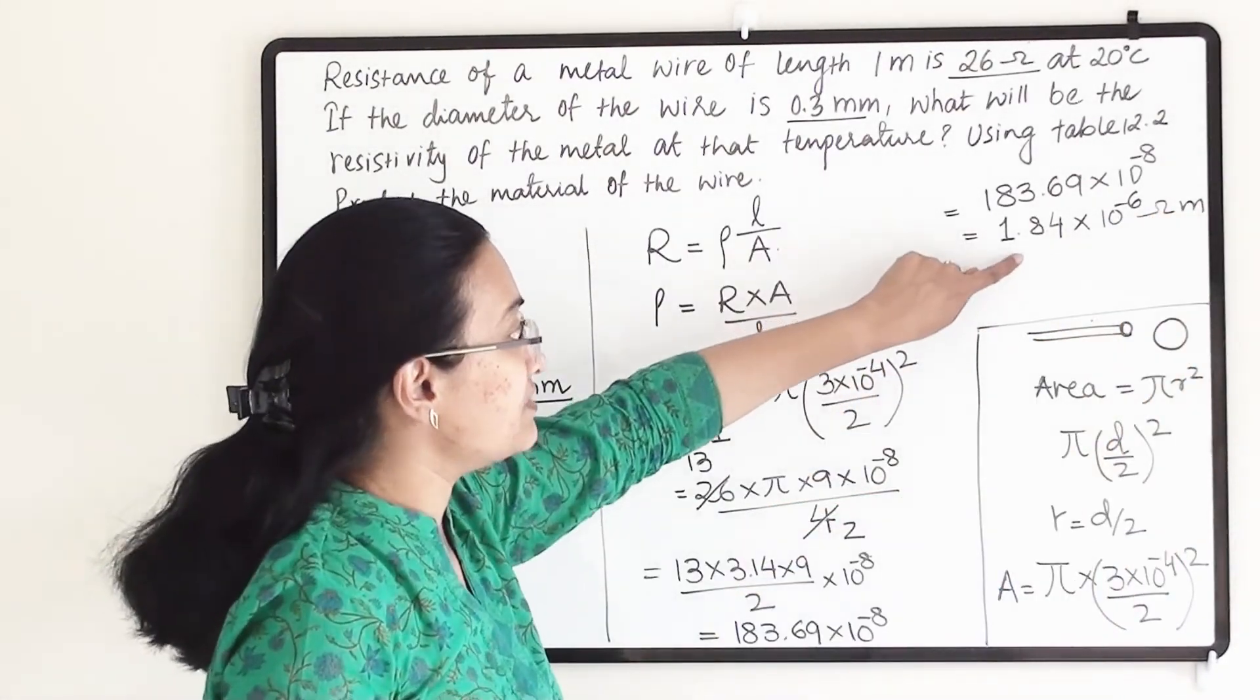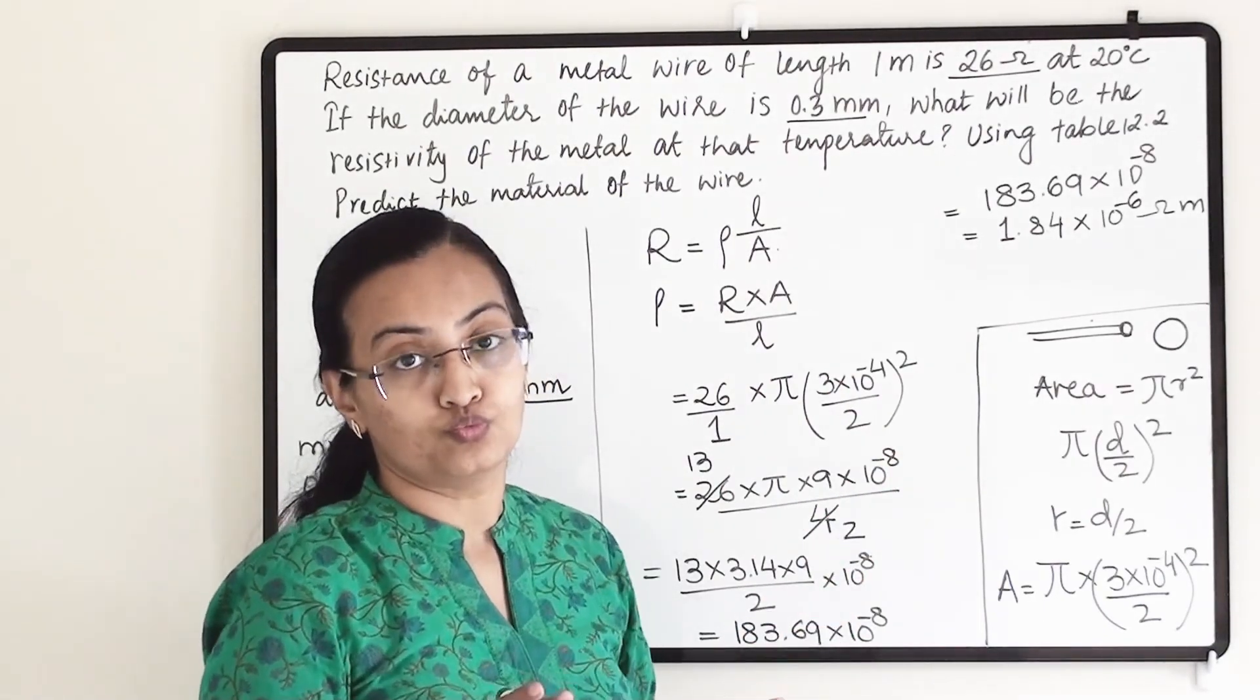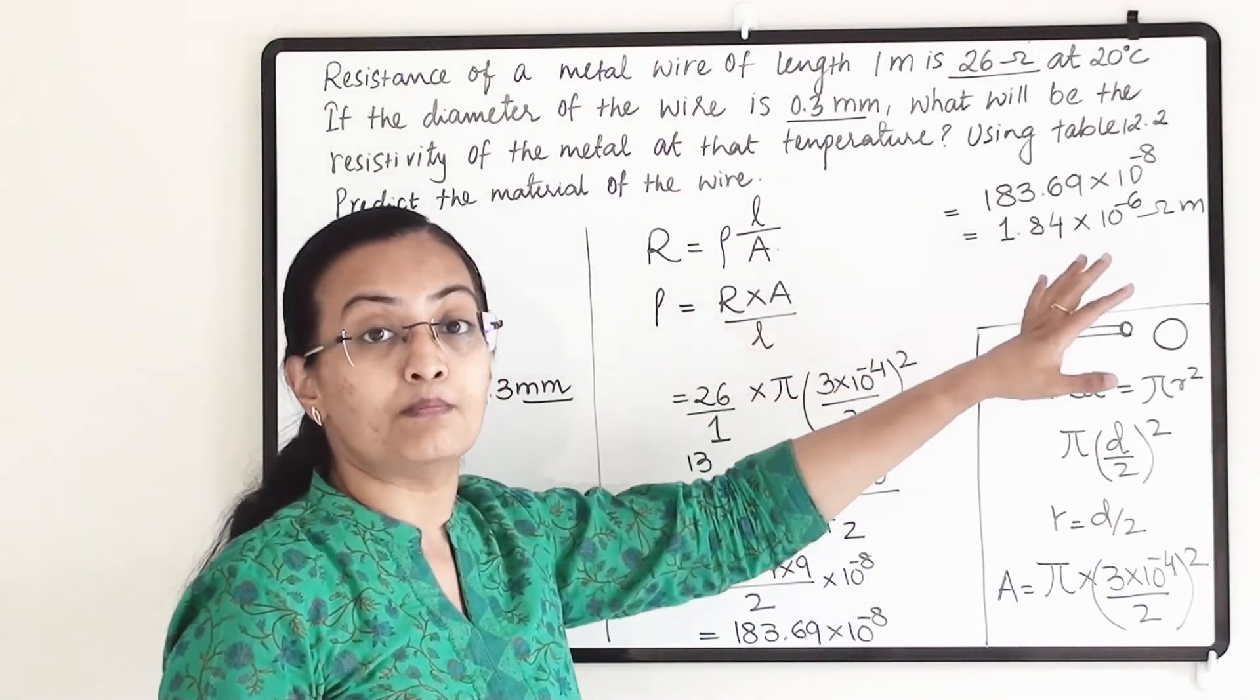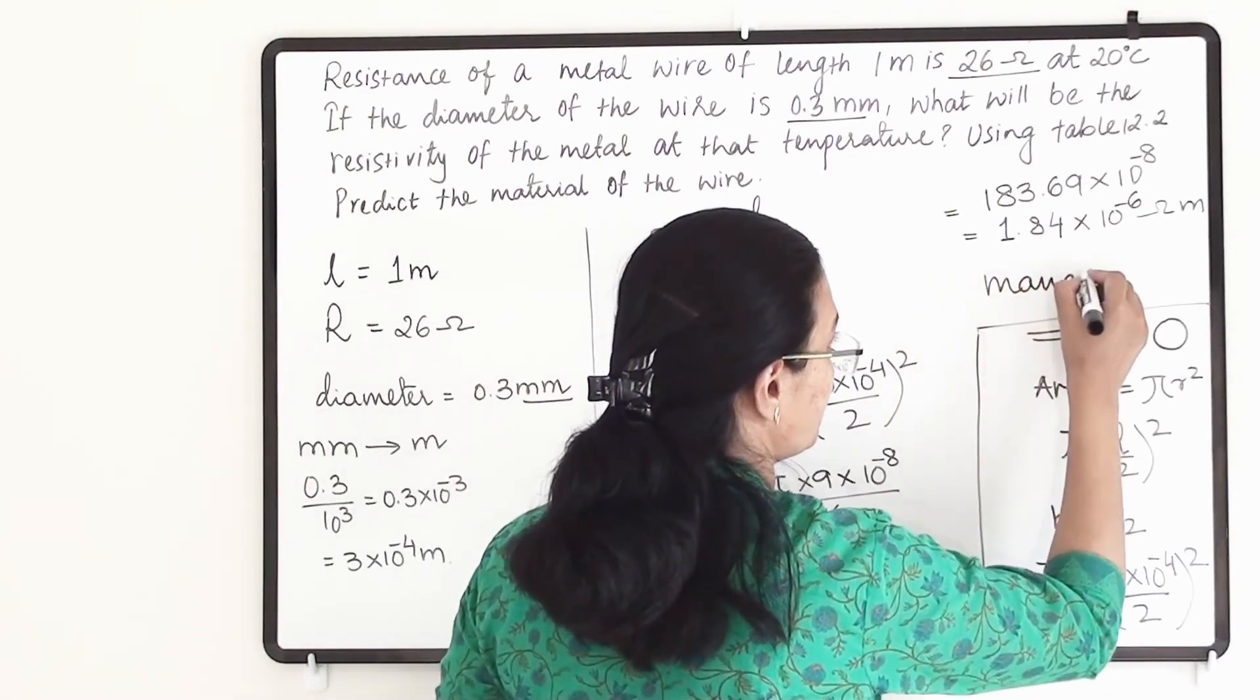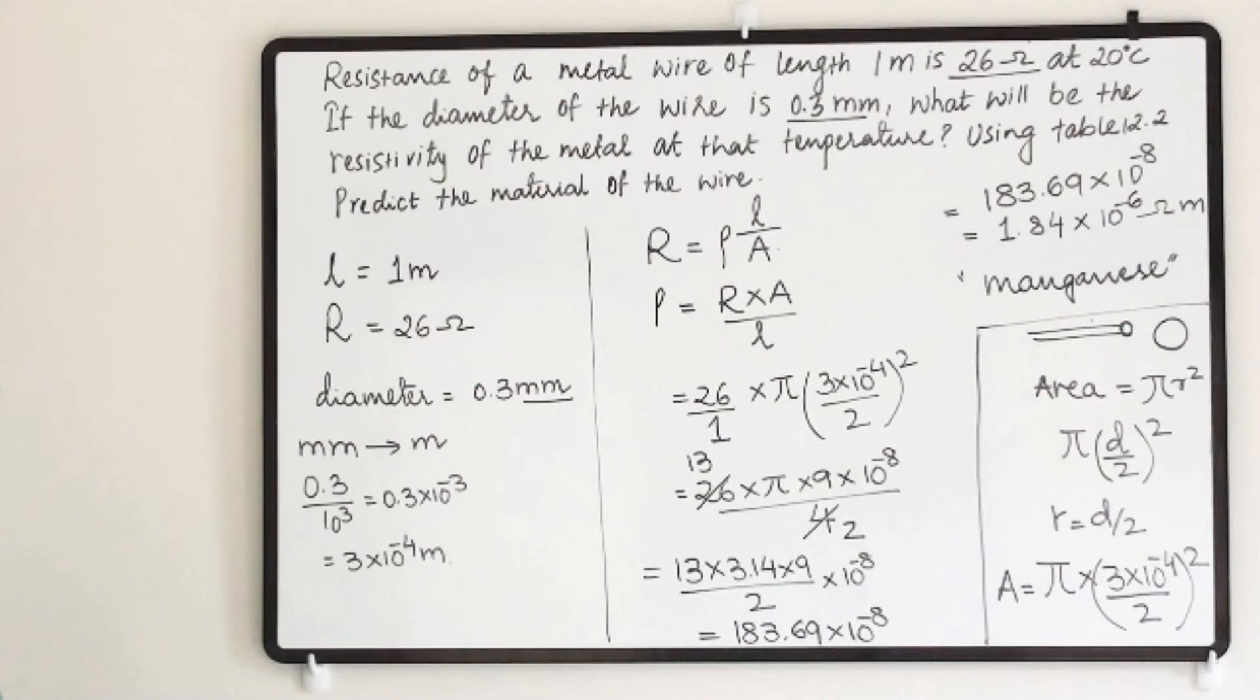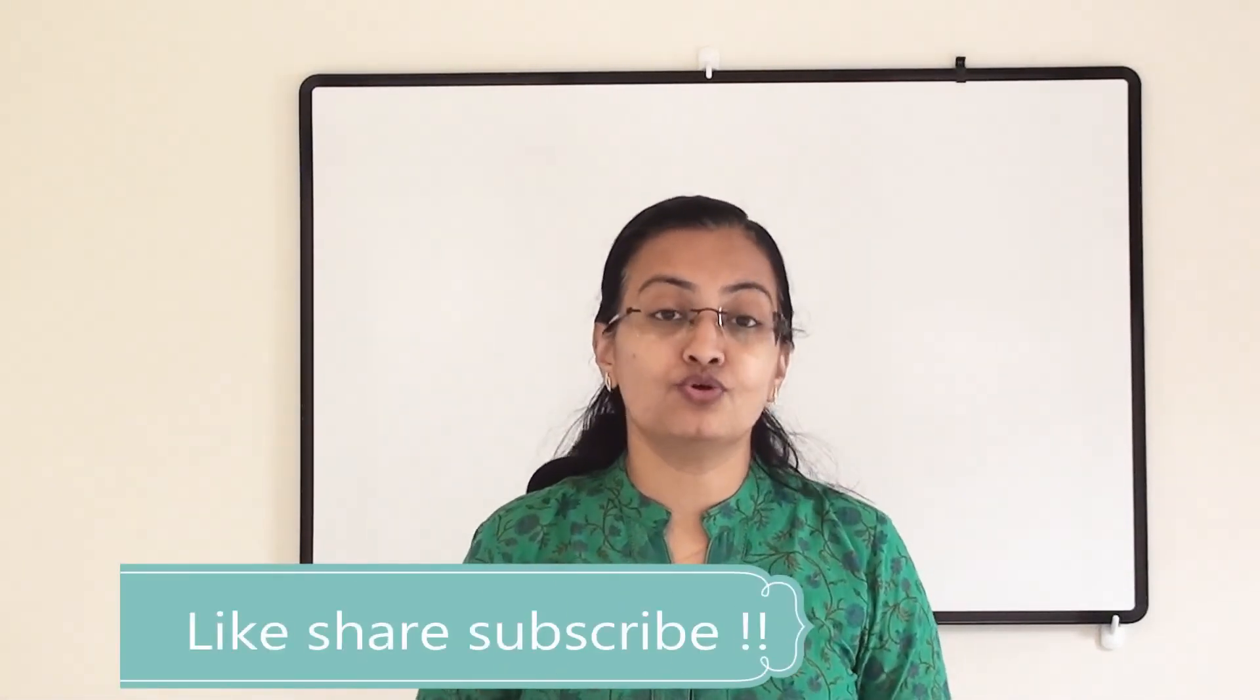Now this resistivity we check against table 12.2, and at 20 degrees Celsius this resistivity is matching with manganese. So this material is manganese. Hope this video has solved your doubt. In coming videos we will cover some important concepts. Don't forget to subscribe. I will see you in the next video. Till then keep learning, keep sharing.